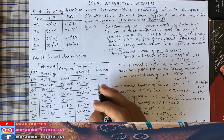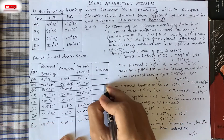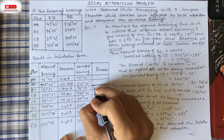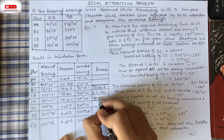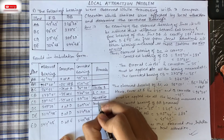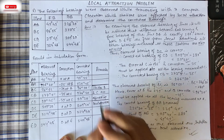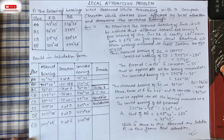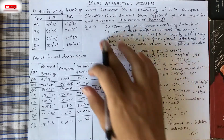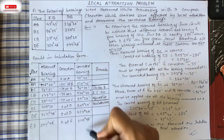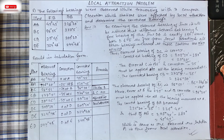Remarks: stations B and C are affected by local attraction. So this is our final answer — we have found which stations are affected by local attraction and also determined the corrected bearings. Friends, with this I want to conclude today's video. If you really liked the video, please do like, comment, and subscribe to my channel. Also don't forget to hit the bell icon for notifications. I will come with more problems in coming days. Thank you.